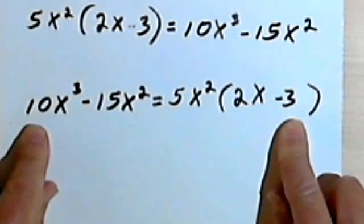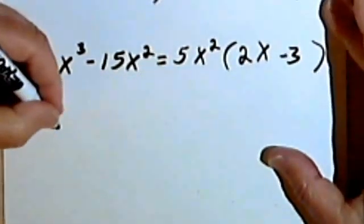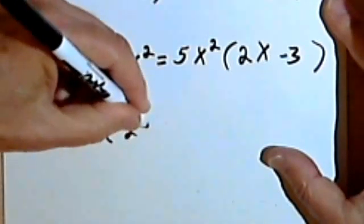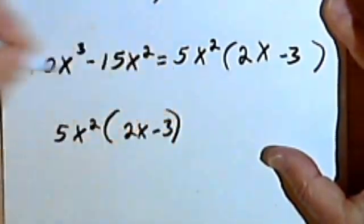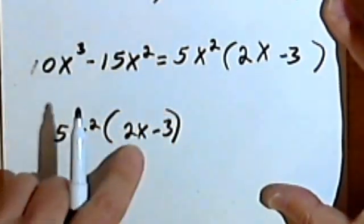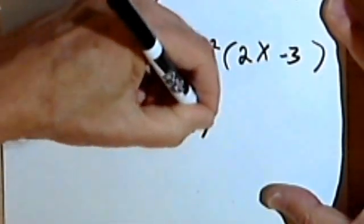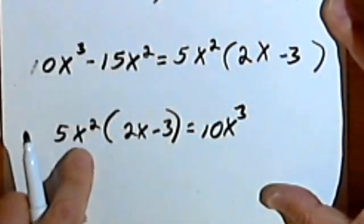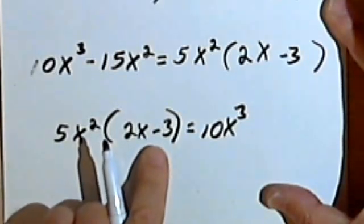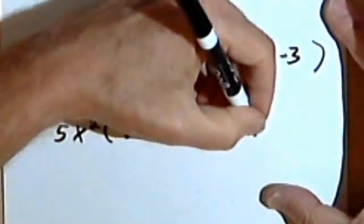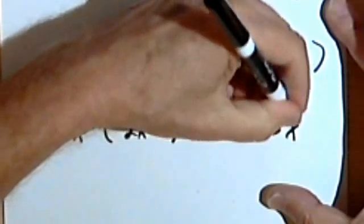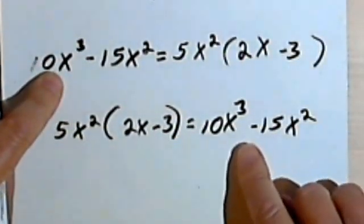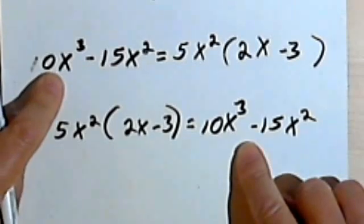If you want to check to make sure your work is correct, take your factorization and multiply it out. So 5x squared times 2x is 10x to the third. 5x squared times negative 3 is negative 15x squared. And that's where I started. If you get back to where you started, then your work is correct.